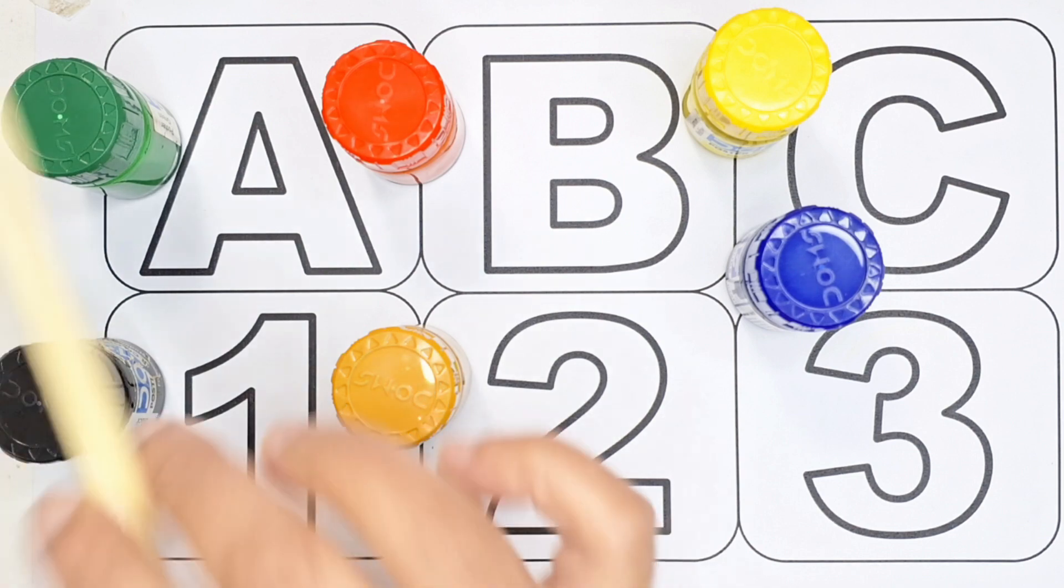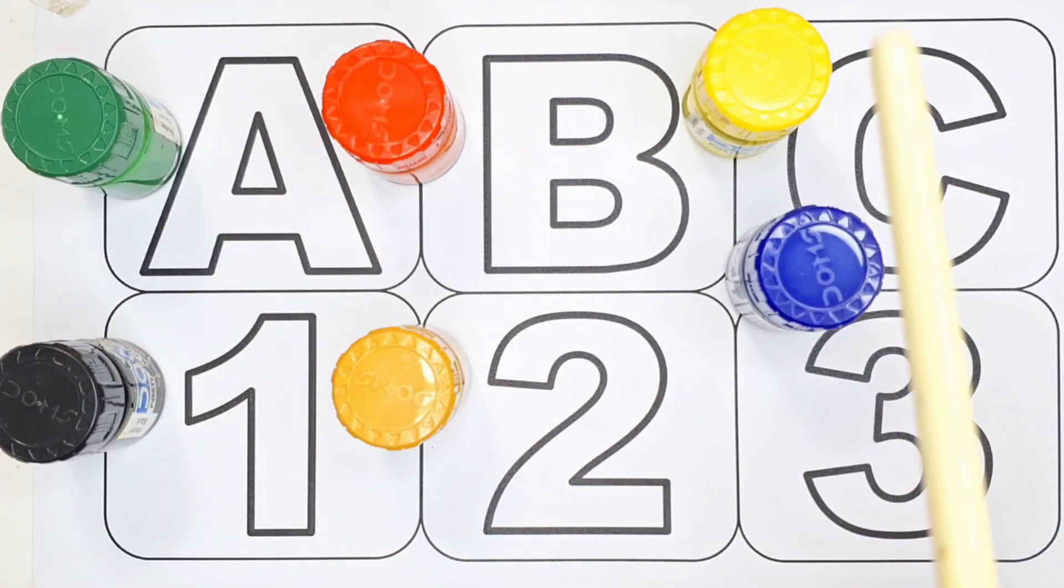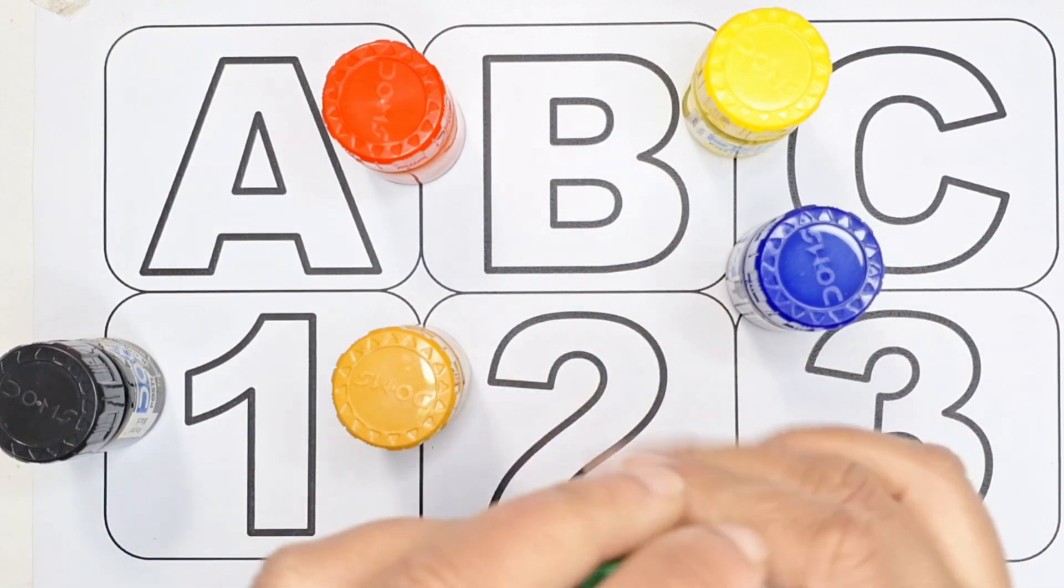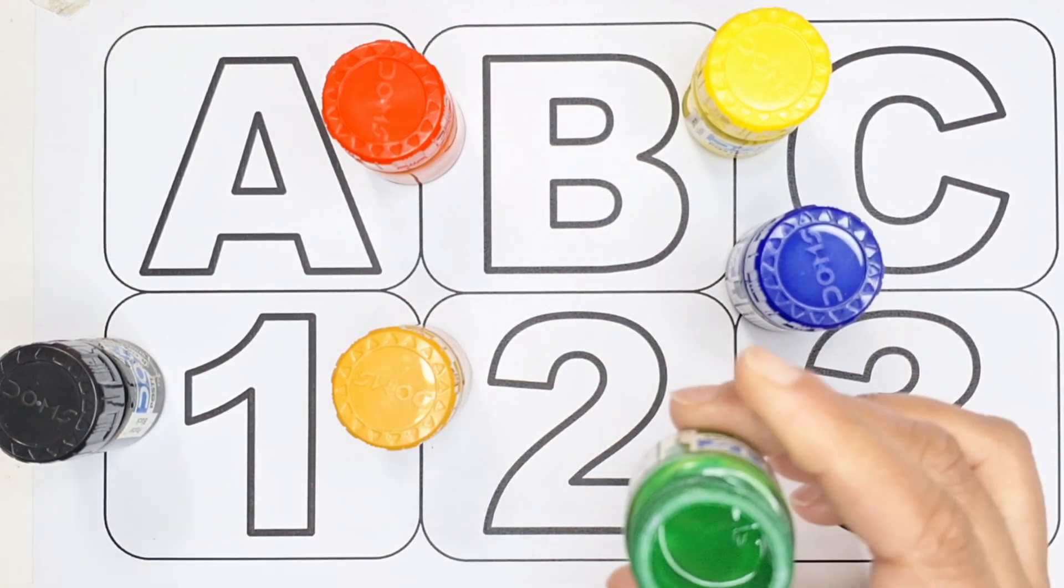These are our colors. Let's learn colors name. Dark green color. This is dark green color.